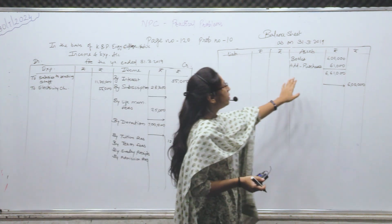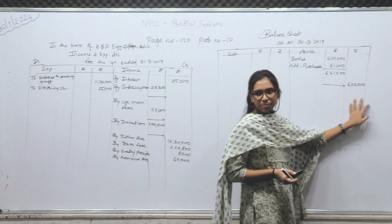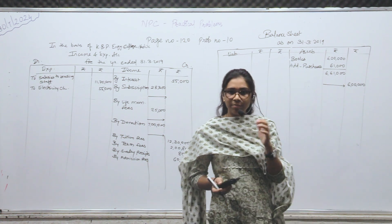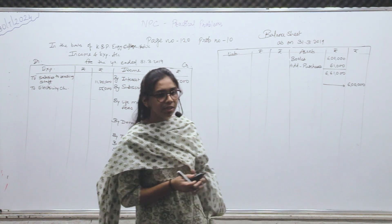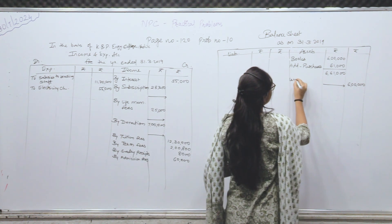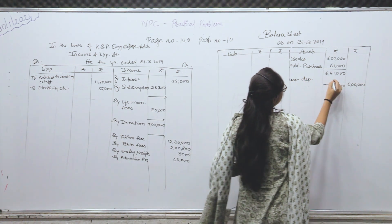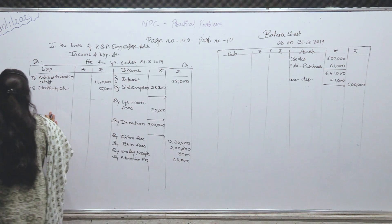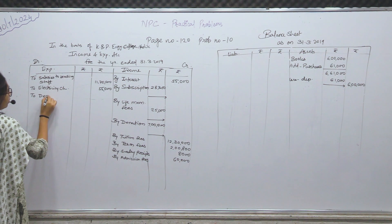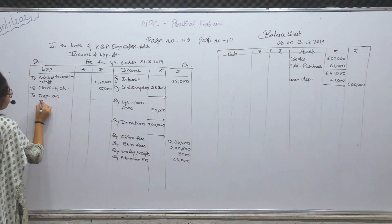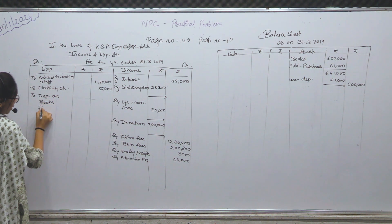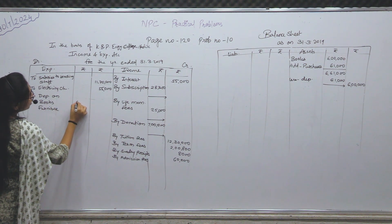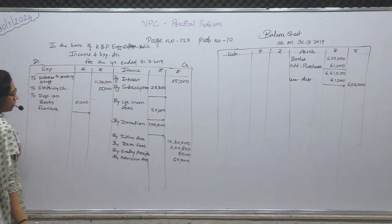क्या समझ में आया — books कम हो गए — कम हुए मतलब depreciate हुए। Hidden depreciation — depreciation है कितना? 61,000। Less — depreciation 61,000। Second effect of depreciation — expenditure side में — to depreciation on books — books का 61,000 आ गया।